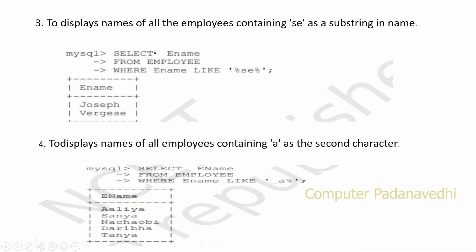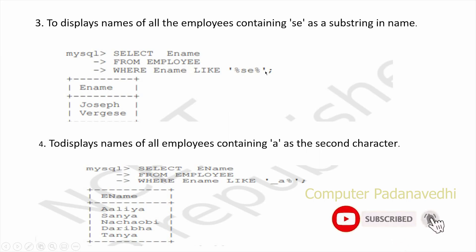To find names containing the substring 'SE': SELECT name FROM employee WHERE name LIKE '%SE%'. The percentage signs on both sides mean it matches any position in the middle.